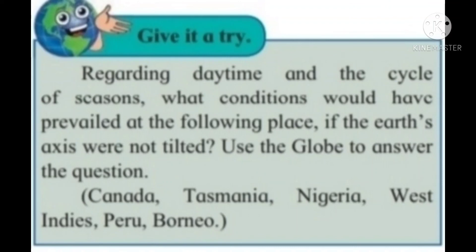Give it a try: Regarding daytime and the cycle of seasons, what conditions would have prevailed at the following places if the earth's axis were not tilted? Use the globe to answer the questions. The places are: Canada, Tasmania, Nigeria, West Indies, Peru, and Borneo.